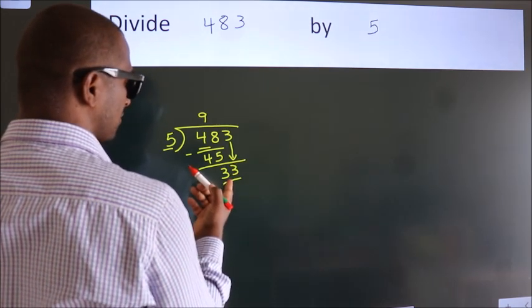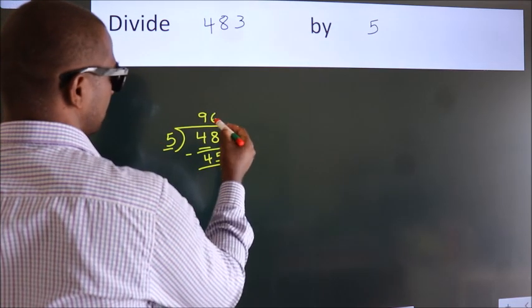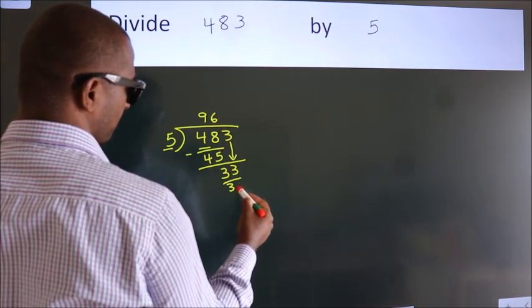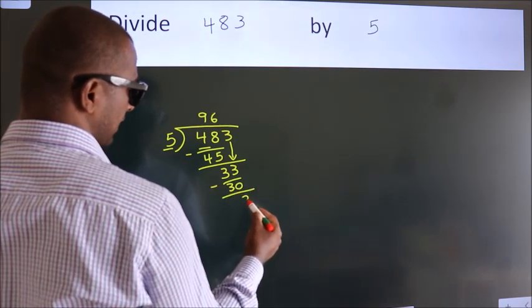A number close to 33 in 5 table is 5, 6, 30. Now we subtract, we get 3.